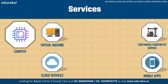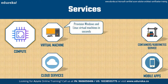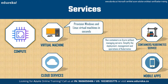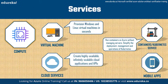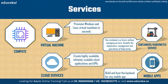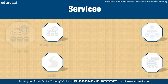The first product John needs is compute. He can use this to deploy and manage virtual machines, containers, and batch jobs, as well as support remote application access. Compute resources created in the cloud can be configured with either public IP addresses or private IP addresses, depending on whether the resource needs to be accessible to the outside world. Some services offered within compute are virtual machines, containers, Kubernetes service, cloud services, and mobile apps.